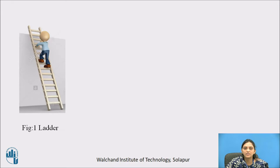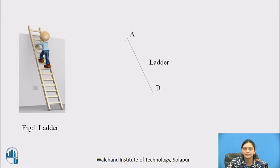In figure 1, a person is standing on a ladder which is on the horizontal floor and rests against the vertical wall. We will draw the free body diagram of that ladder. This is a line showing the ladder. The top point is A and the base point is B. At point A, it is supported by the vertical wall, and at point B, it is supported by the floor.